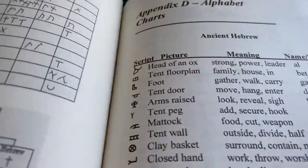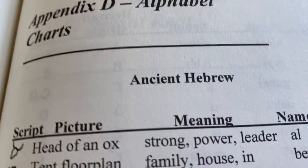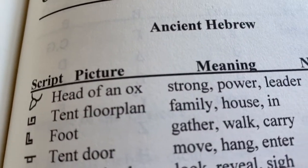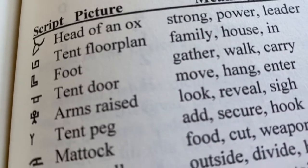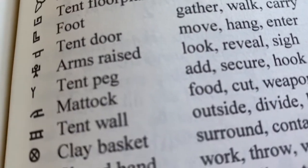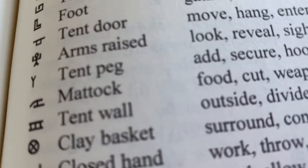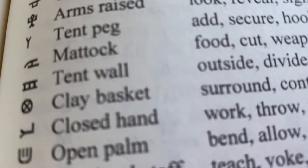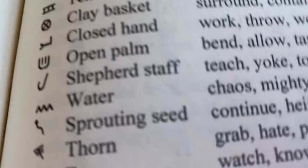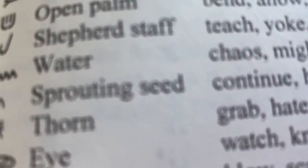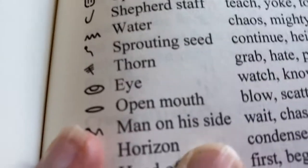Here is the alphabet in ancient Hebrew. The first one: head of an ox. Second one: the tent. Then the foot, tent door, arms raised — the man — Look! It means tent peg. The matok — a kind of sickle. Tent wall, clay basket, closed hand, open palm, shepherd's staff. Water is the M. Sprouting seed is the N, and so on.